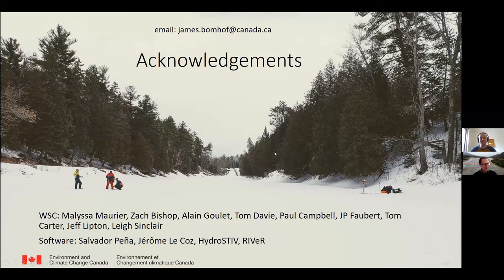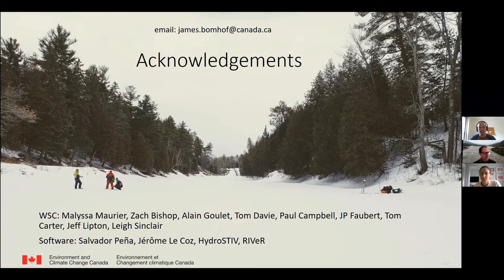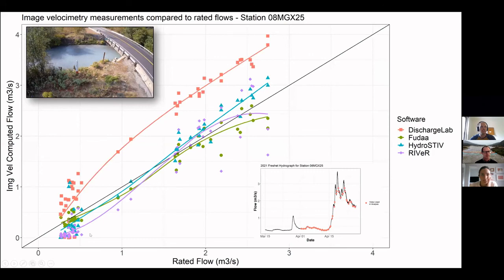Does anybody have questions for James? On the topic of scatter at low flows — I understand why it happens, but have you any ideas on ways to improve that? Or is that just something that means these methods perhaps aren't suitable for low flow measurements? We haven't looked into it too much because the main use case we see for this technology is the higher floods, and the rating curves are very stable at low flows. For even Pemberton, we cut it off at 0.6 cubic meters per second and just use the rating curve for that. There hasn't been a big motivation to look into that further.